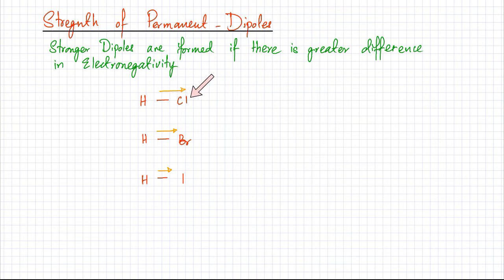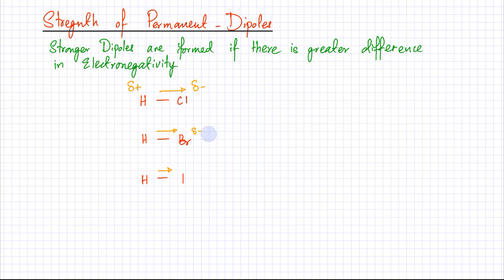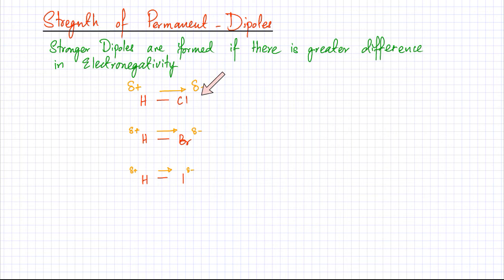All electrons would be pulled towards chlorine, so there is going to be a very large slight negative charge and a very large slight positive charge due to the greater difference in electronegativity and more unequal electron distribution. In HBr, bromine is slightly less electronegative, so the charges are relatively smaller. For iodine it's going to be very weak. So HCl has the strongest dipole, HBr has a relatively weaker dipole, and HI has a very weak dipole — if the difference in electronegativity is larger, dipoles are stronger.